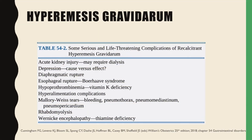Here are some serious and life-threatening complications of recalcitrant hyperemesis gravidarum. The patient may have acute kidney injury which may require dialysis. She may also be pushed to depression. She may have diaphragmatic rupture, esophageal rupture which we call Boerhaave syndrome, hypoprothrombinemia, hyperalimentation complications, Mallory-Weiss tears, and rhabdomyolysis.